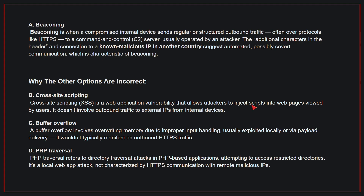Why the other options are incorrect? B. Cross-site scripting. Cross-site scripting is a web application vulnerability that allows attackers to inject scripts into web pages viewed by users. It doesn't involve outbound traffic to external IPs from internal devices. C. Buffer overflow. A buffer overflow involves overriding memory due to improper input handling, usually exploited locally or via payload delivery. It wouldn't typically manifest as outbound HTTPS traffic. D. PHP traversal. PHP traversal refers to directory traversal attacks in PHP-based applications, attempting to access restricted directories. It's a local web app attack, not characterized by HTTPS communication with remote malicious IPs. Therefore, the correct answer is A.